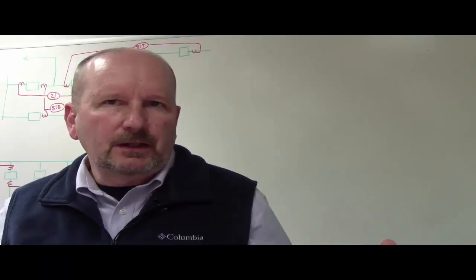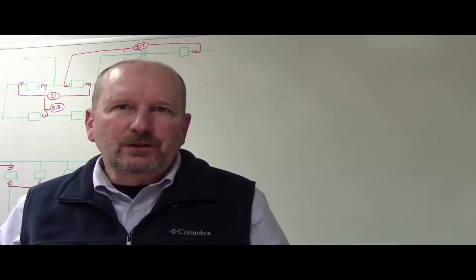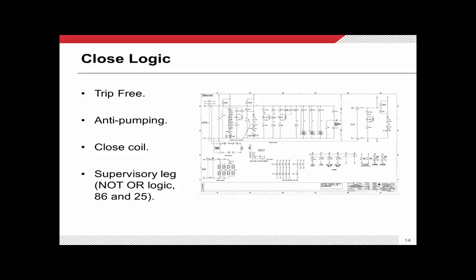We need the thing to trip and remain open, and we accomplish this through a scheme called the anti-pumping scheme, which we'll cover in just a minute. This gives all of our circuit breakers the characteristic of being trip free, and is absolutely essential for how we protect the transmission grid.